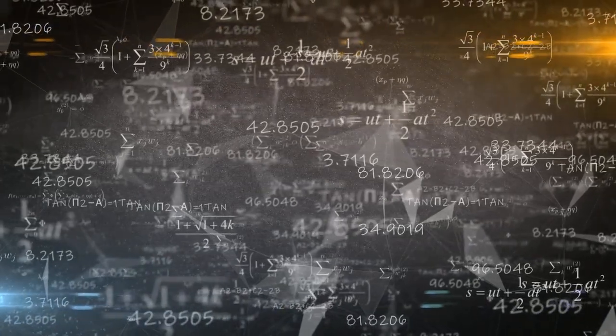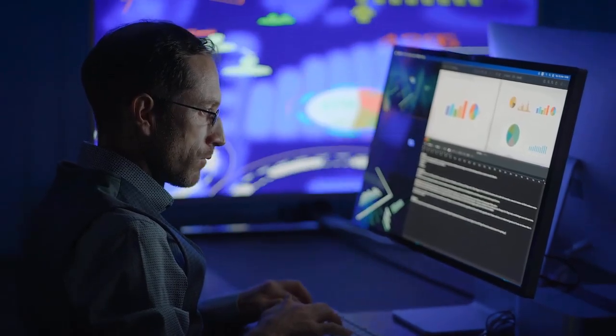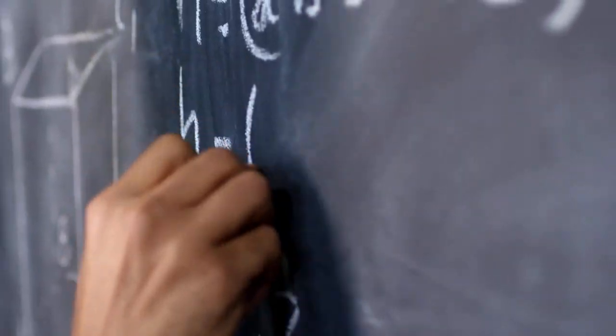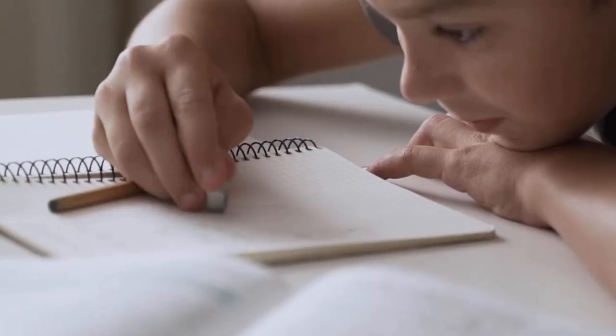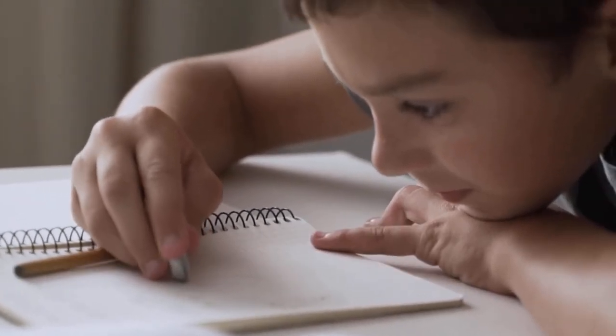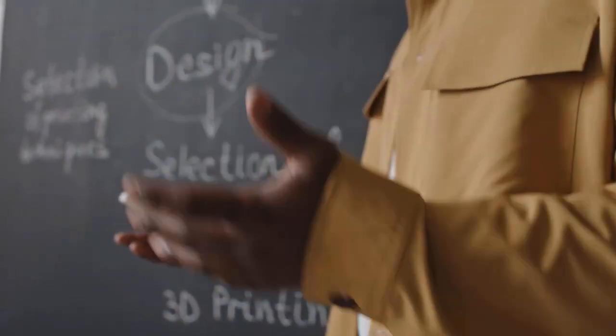This is a huge departure from the norm. Traditional math systems often only focus on accuracy. But Math V2 acknowledges that the process is what matters. It's designed to be like a real student, a student who can learn and correct their mistakes.